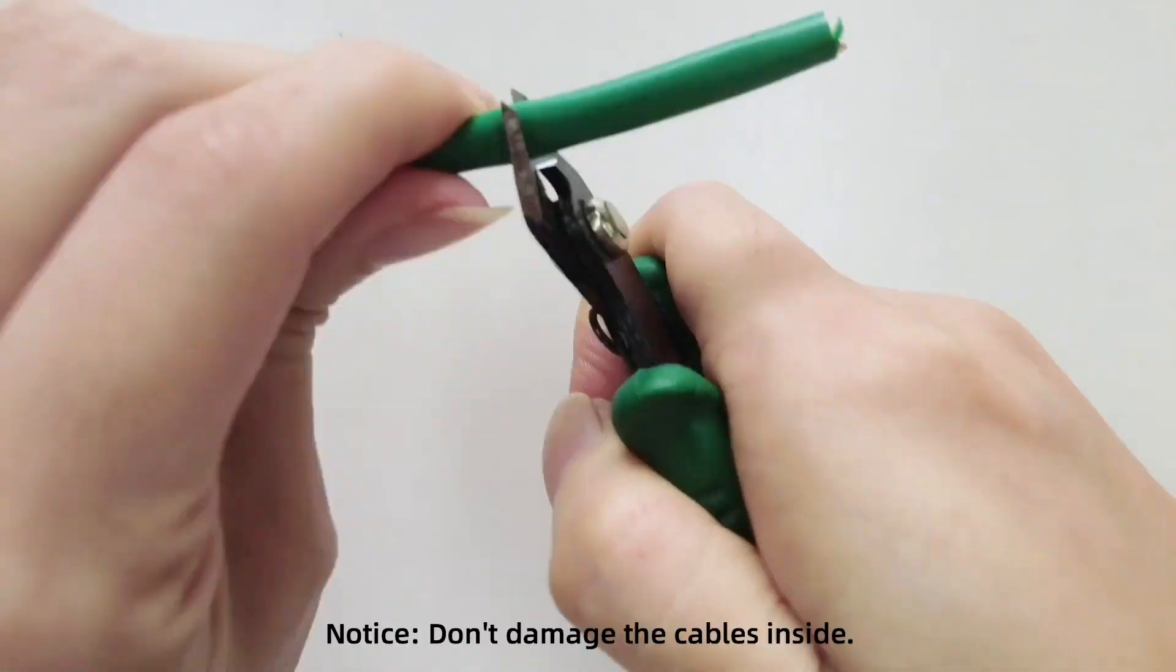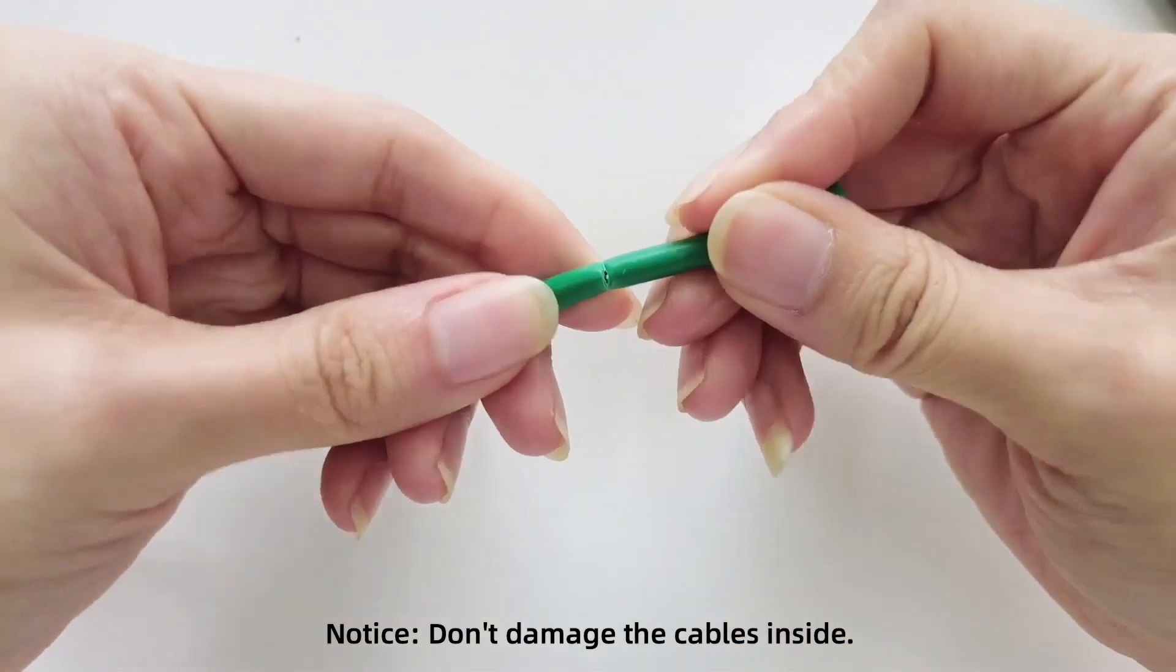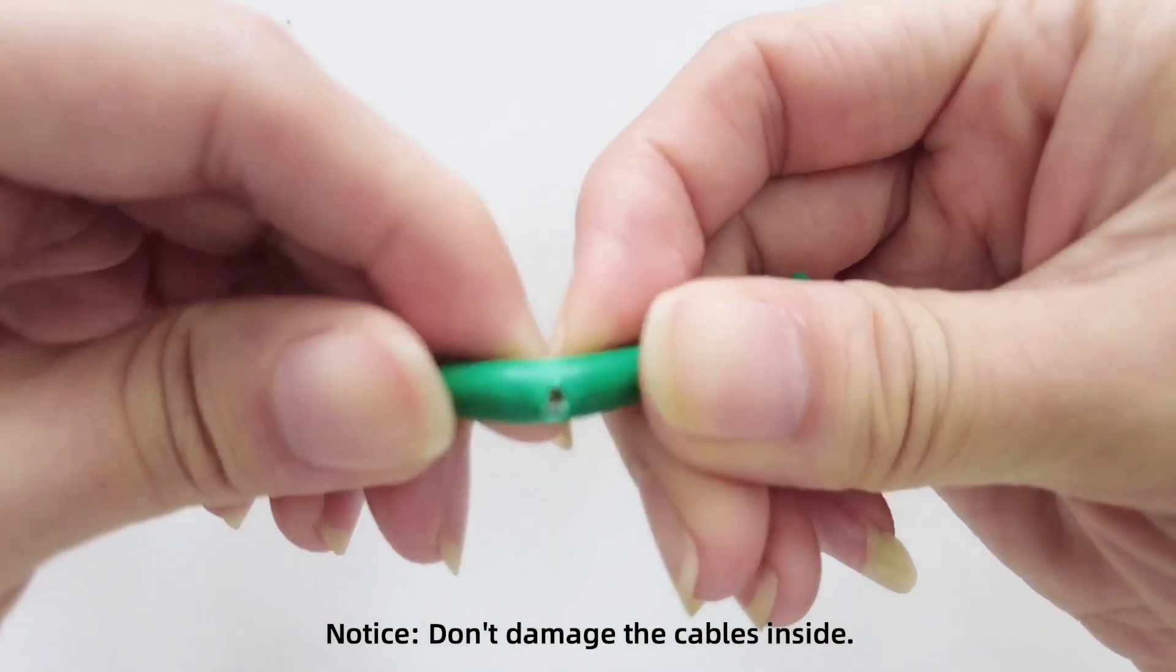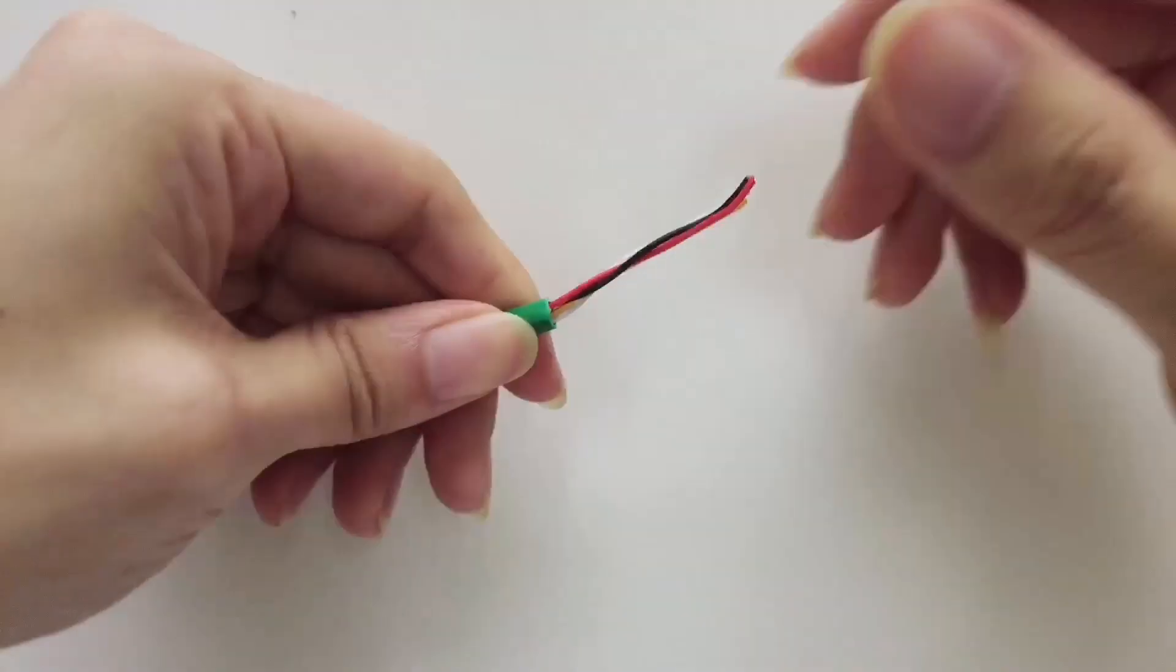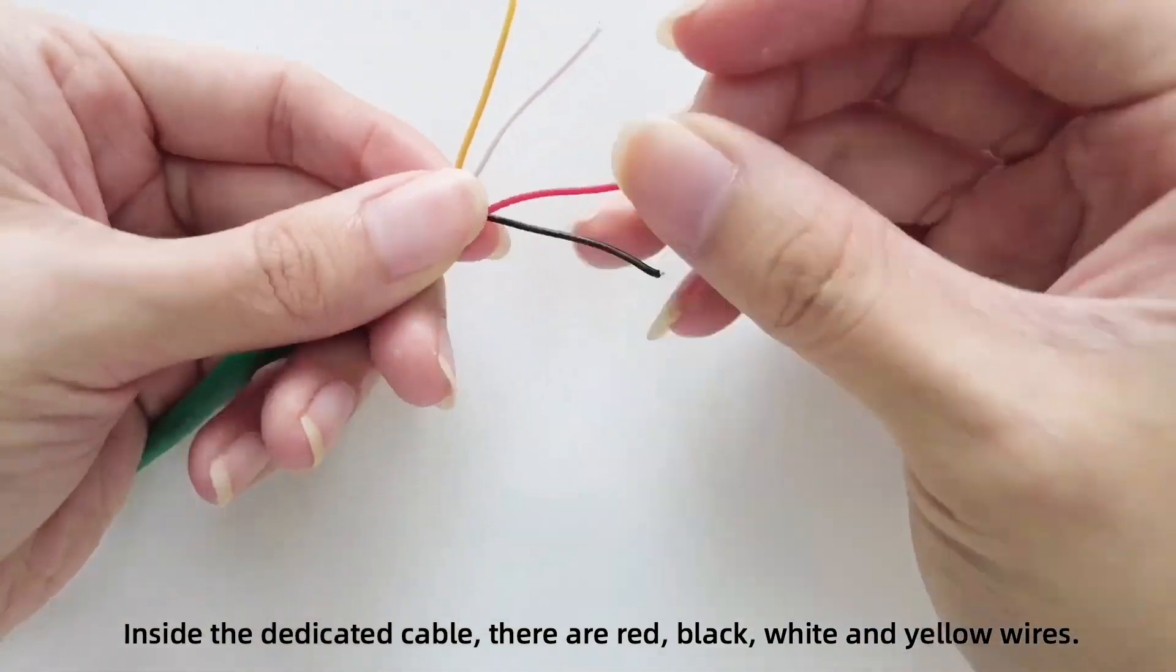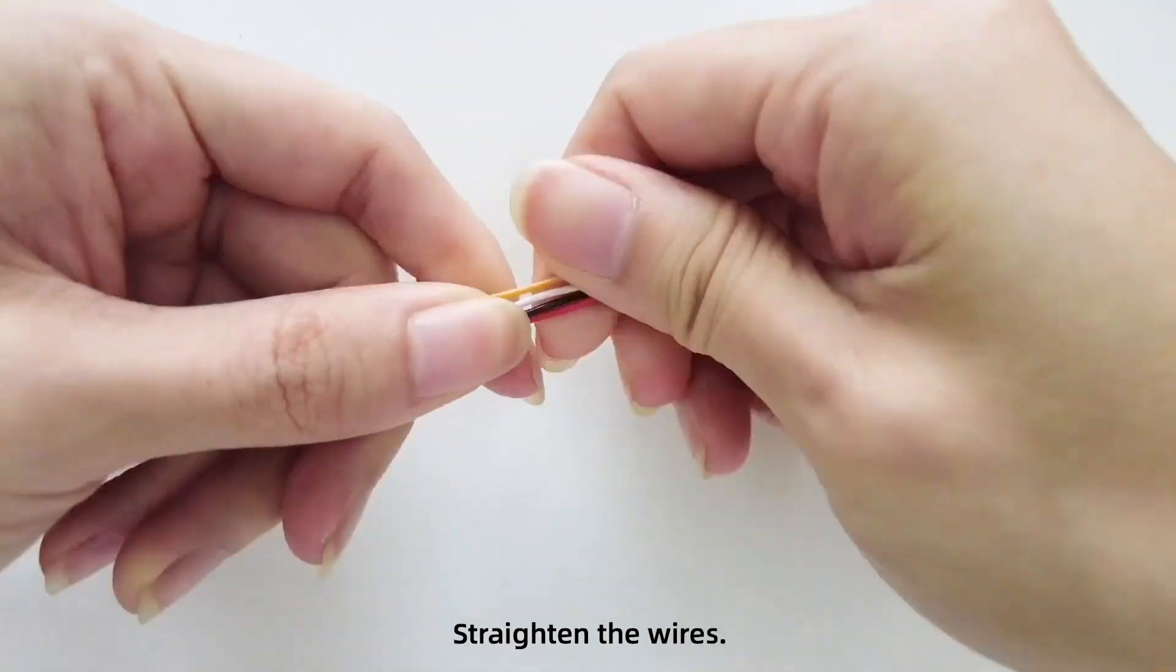Strip the outer protective layer approximately 3 cm from the end. Be careful not to damage the cables inside. Inside the dedicated cable there are red, black, white and yellow wires.